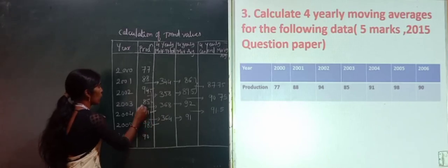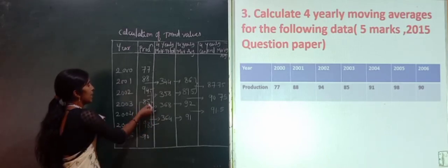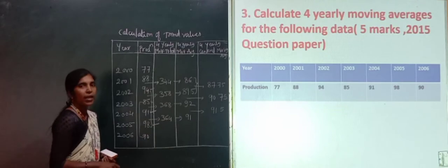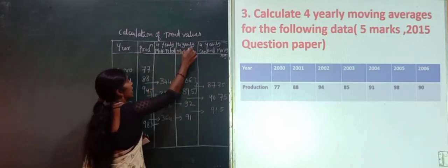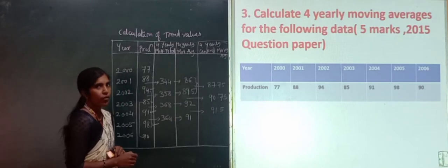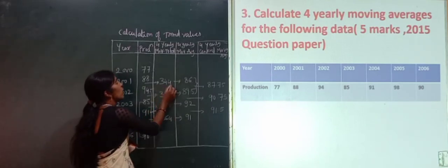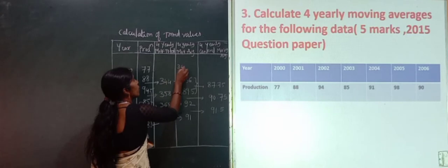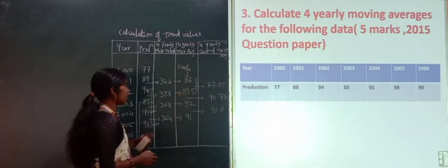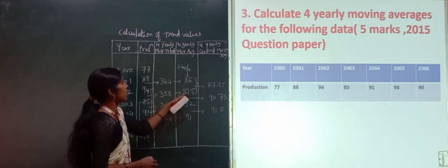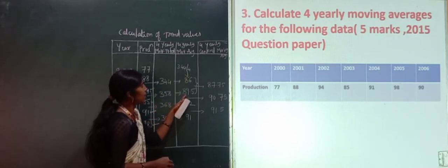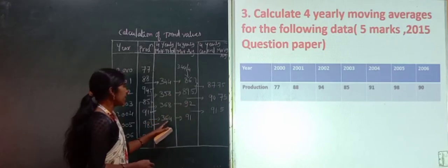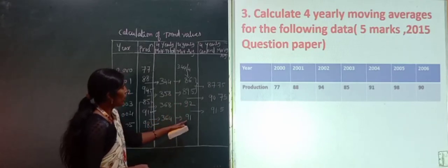The last group is 85, 91, 98 and 90, giving a total of 364. Now the 4 yearly moving average is the 4 yearly moving total divided by 4. So 344 divided by 4 equals 86, 358 divided by 4 equals 89.5, 368 divided by 4 equals 92, and 364 divided by 4 equals 91.